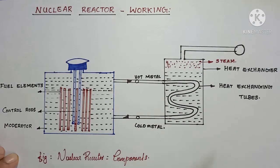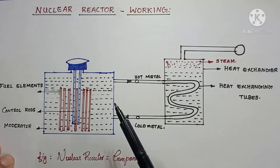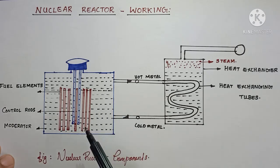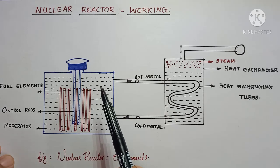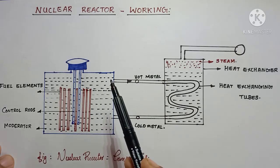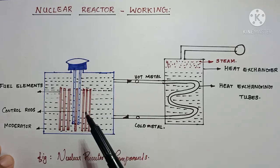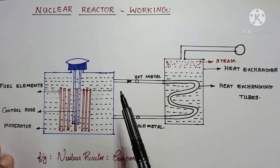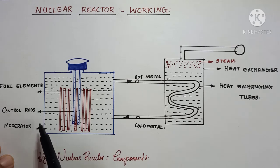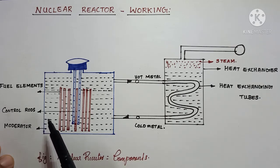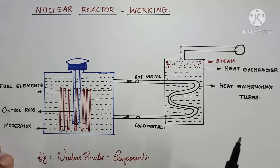This is the major working of nuclear reactor. At the nuclear reactor, we will get large amount of heat energy due to nuclear fission. Fuel elements, control rods, and moderators are the basic three elements required for nuclear reactor.